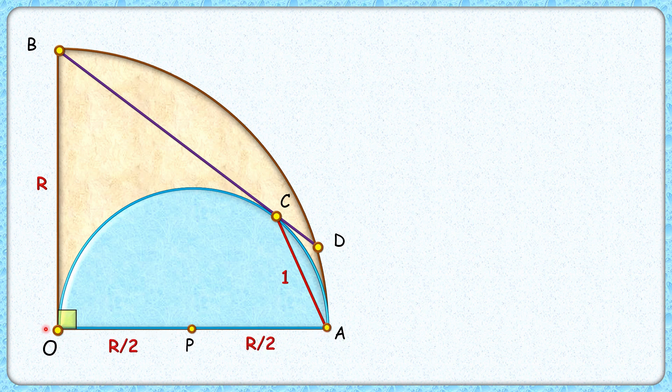Now let's join OC. In this blue semicircle, OA is the diameter which is subtending an angle at point C. By theorem, it will be 90 degrees. Also, let's join BP. Let's assume they are intersecting at point Q.